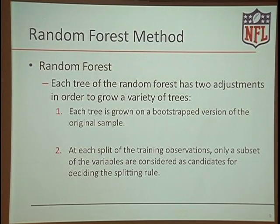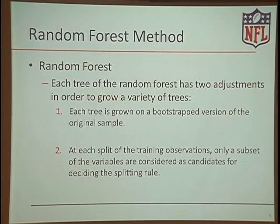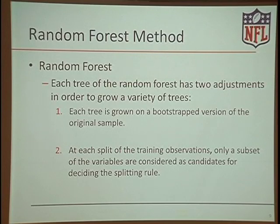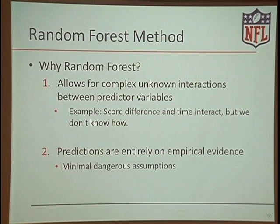It's no use growing a bunch of different trees if they all produce the same tree. So each tree in the forest has two adjustments to grow a nice variety: first, each tree is grown on a bootstrapped version of the original sample; and second, at each split only a subset of variables are considered as candidates for the splitting rule — maybe we only look at two variables at one point rather than all ten.